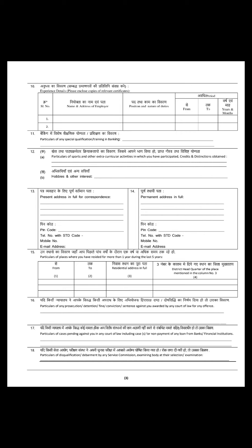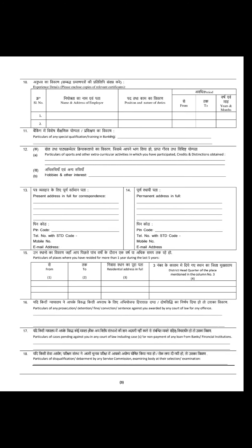उसके बाद आपकी hobbies और जो भी sports या co-curricular activities में अगर आपने कुछ special किया है तो वो यहाँ mention कर सकते हो। उसके बाद 13, 14, 15 वाले points - यह police verification और CID verification के time पर बहुत ज़्यादा ज़रूरी हैं। यह addresses आपको बहुत ध्यान से fill करने हैं - present address और permanent address। अगर दोनों same हैं या अलग हैं उस हिसाब से भरें। 15th point में अगर आप पिछले 5 सालों में किसी जगह एक साल से ज़्यादा रहे हैं तो वो mention करें, नहीं तो birthplace mention कर सकते हैं।